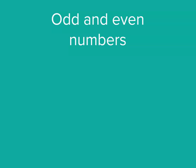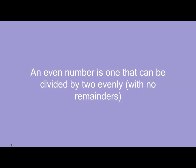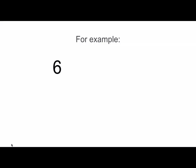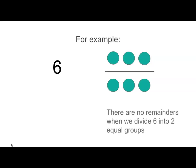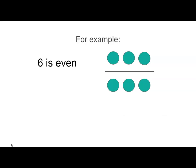What does it mean if we say a number's odd or even? An even number is one that can be divided by two evenly, so that means there's no remainders and no splitting anything in half. For example, think about the number six. Can six be divided by two evenly? Yes, you can see that there are no remainders when we divide six into two equal groups.